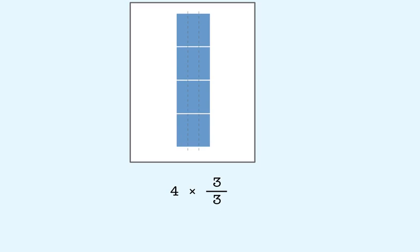When we multiply, we get 12 thirds. 12 thirds is equal to 4. So, 4 times 3 thirds is equal to 4. When we multiplied 4 by a fraction equal to 1, the answer was the same number we started with, 4.